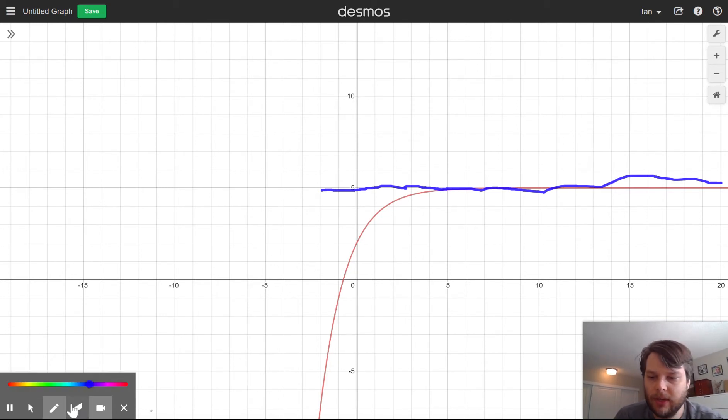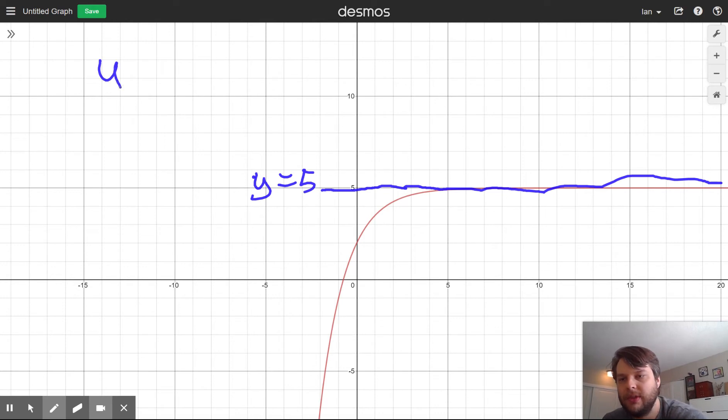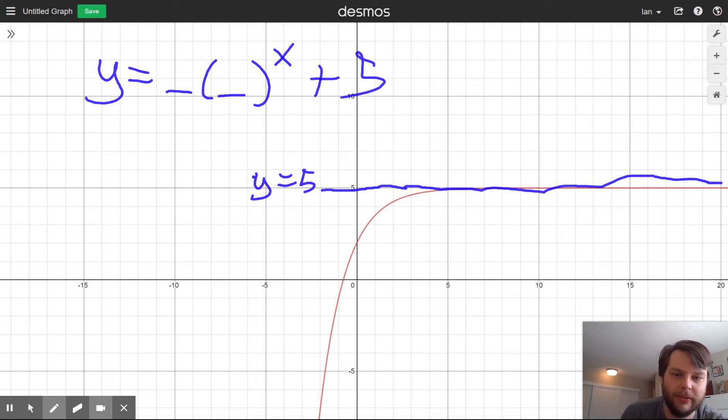And so the asymptote is at y equals 5. So I know that my equation for this curve is going to be something times something to the x plus 5. I know we get the plus 5 just from the asymptote.